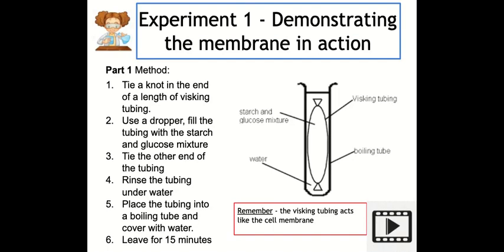We're now going to look at the first experiment in this topic. Since we can't carry this out in the lab, I'll go step by step through it using diagrams and a short video to help you visualise it. The purpose of this experiment is to demonstrate how the cell membrane works in terms of it being selectively permeable. It's often referred to as the model cell experiment because real cells are so small we need a microscope to see them, never mind the tiny cell membrane — so we use a larger model. In place of the cell membrane we use something called visking tubing.